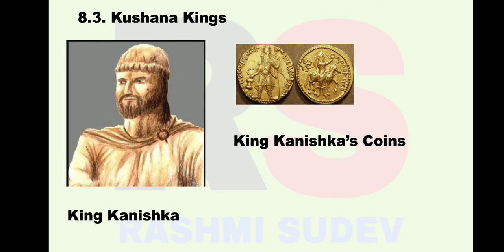Kushana king Kanishka started extending the empire. He extended it from Kabul to Varanasi. In excavations, gold and copper coins made by Emperor Kanishka have been found. The Fourth Buddhist Council was held in Kashmir, and he established a city called Kanishkapura in Kashmir.